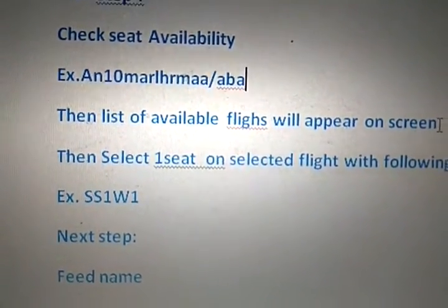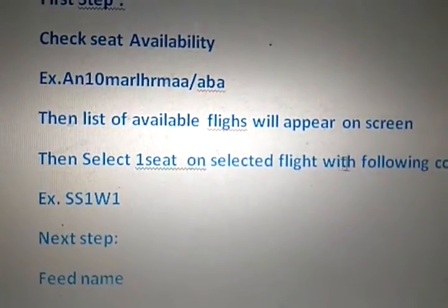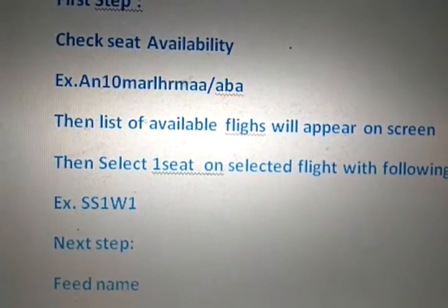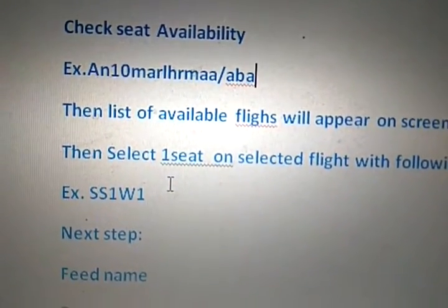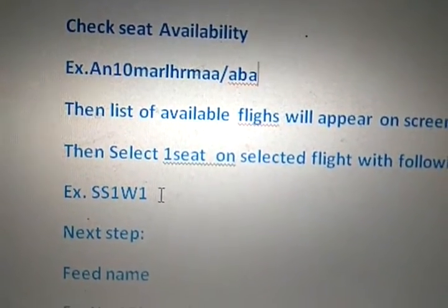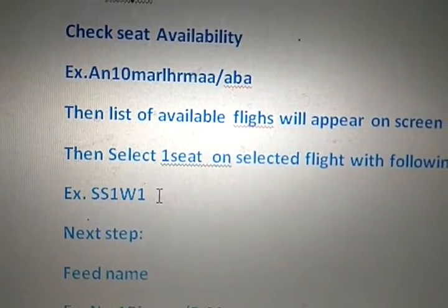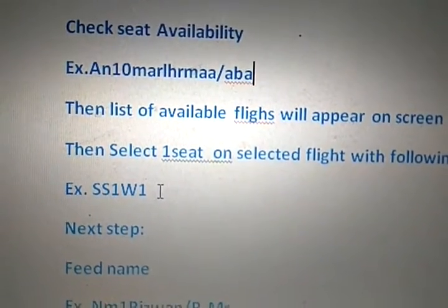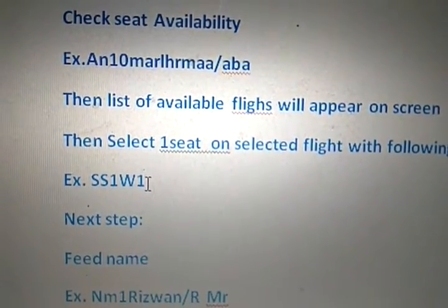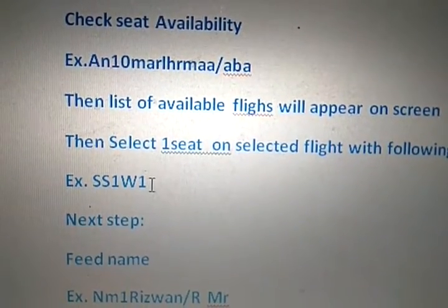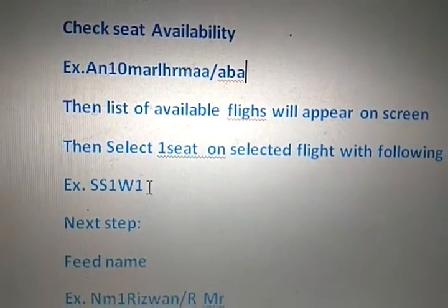Then select one seat on a selected flight with the following command, for example: SS1 W1. SS1 is the default CRS command, W is the class of booking from the listed flights, and 1 means seat number one — only one seat you are going to select from the series.